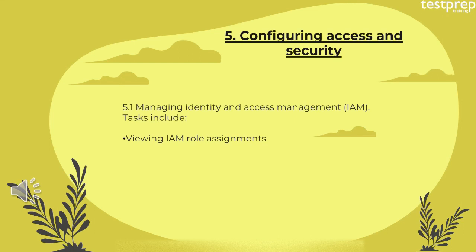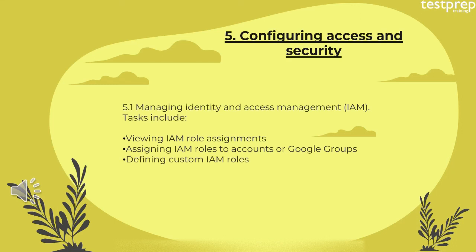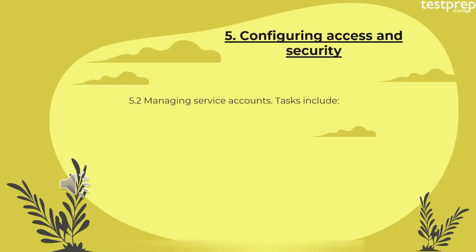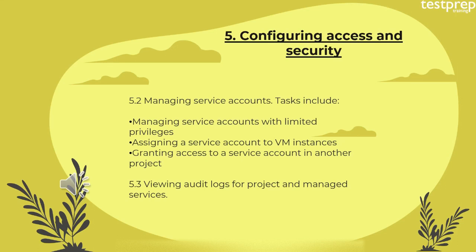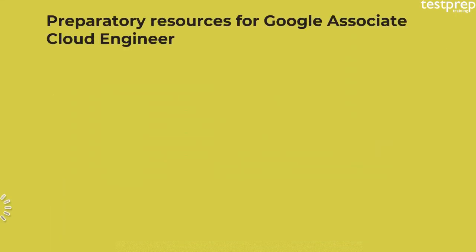Fifth domain: configuring access and security. Number one: managing Identity and Access Management (IAM) — tasks include viewing IAM role assignments, assigning IAM roles to accounts or Google Groups, and defining custom IAM roles. Number two: managing service accounts — tasks include managing service accounts with limited privileges, assigning a service account to VM instances, and granting access to a service account in another project.